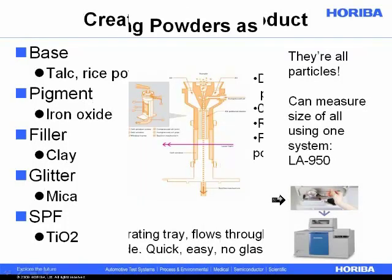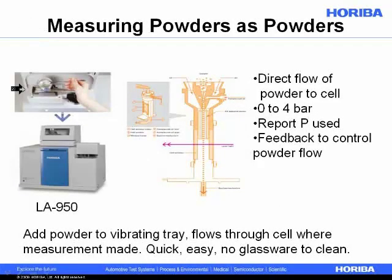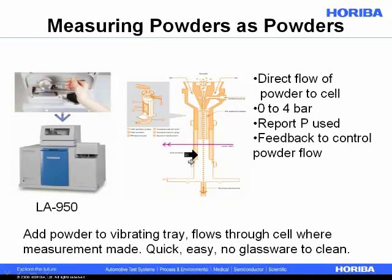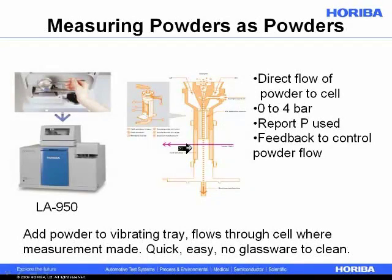When we want to measure powders, we can measure them directly as powders using the LA-950. You see here adding the powder to a vibrating tray; in the middle is a picture of the venturi, and this is the dry powder cell used to present the powder to the instrument for measurement. Compressed air is entered here — anywhere from 0 to 4 bars. We draw the powder and drive it through the measurement zone and collect it in a vacuum, with a feedback control loop to maintain constant mass flow through the optics for the most reproducible measurements.